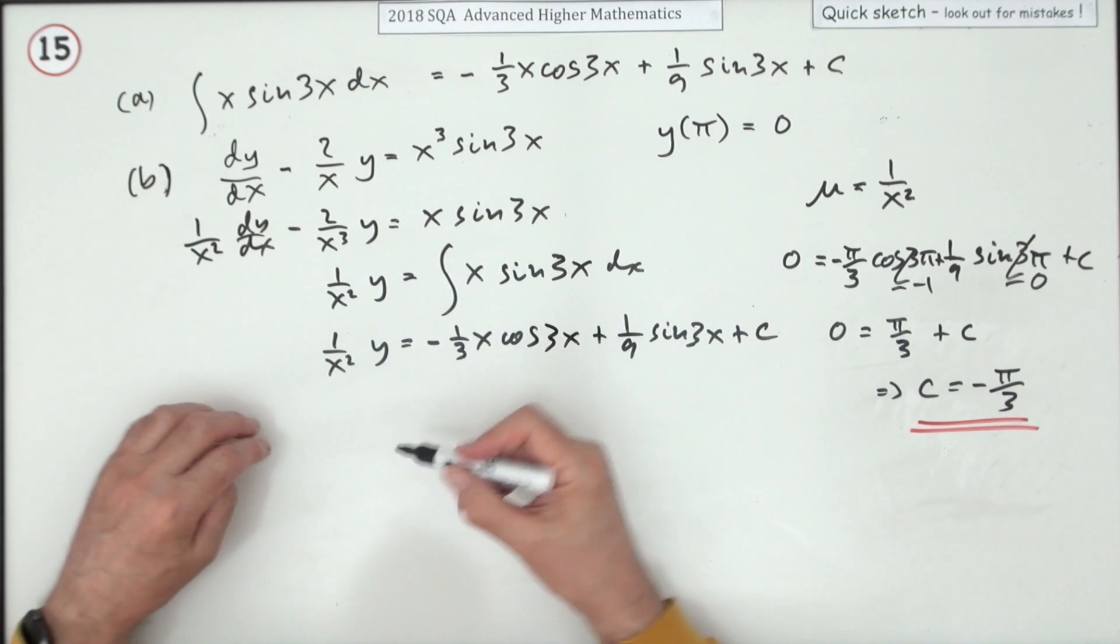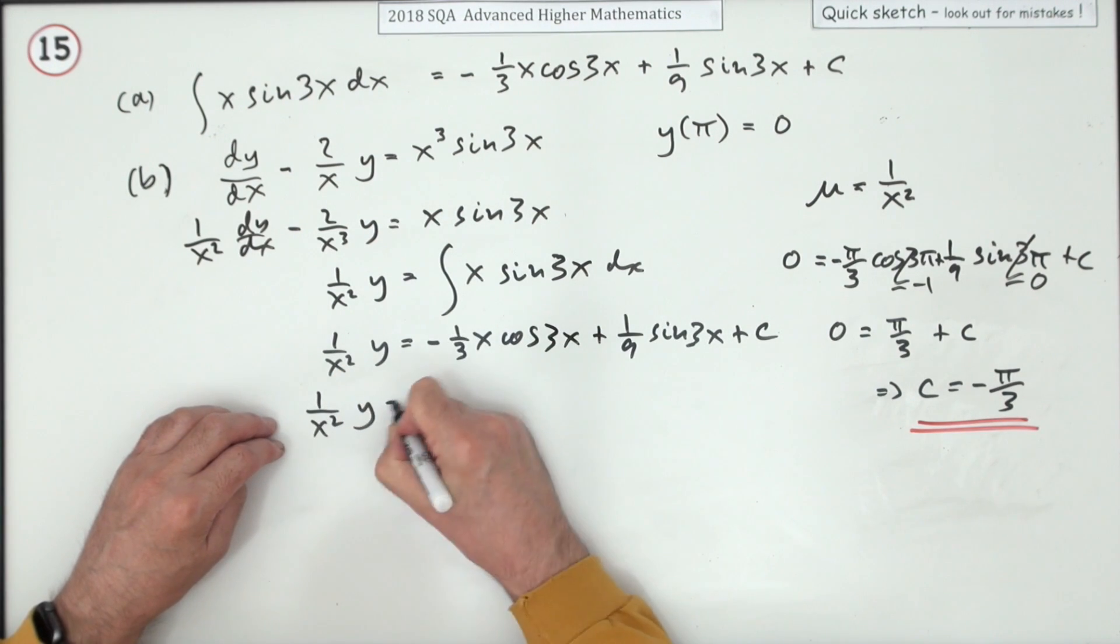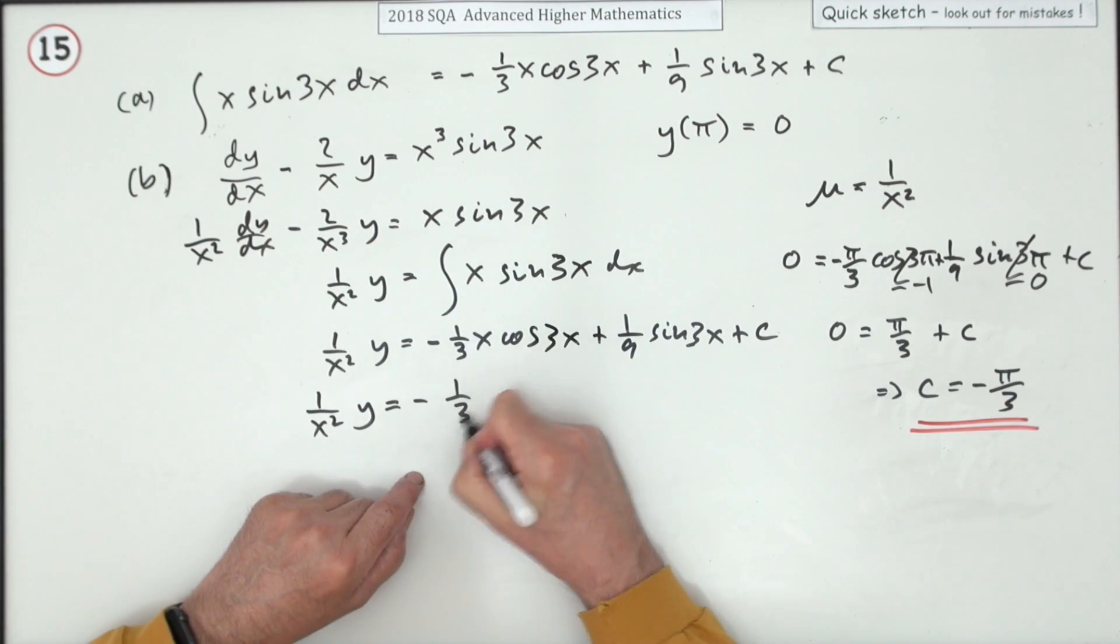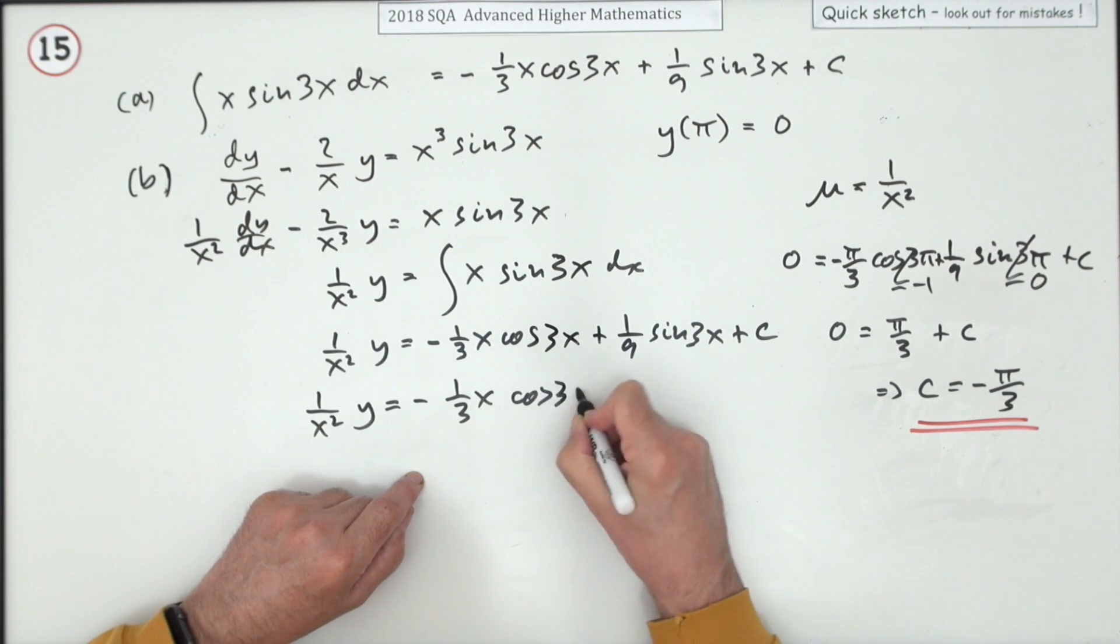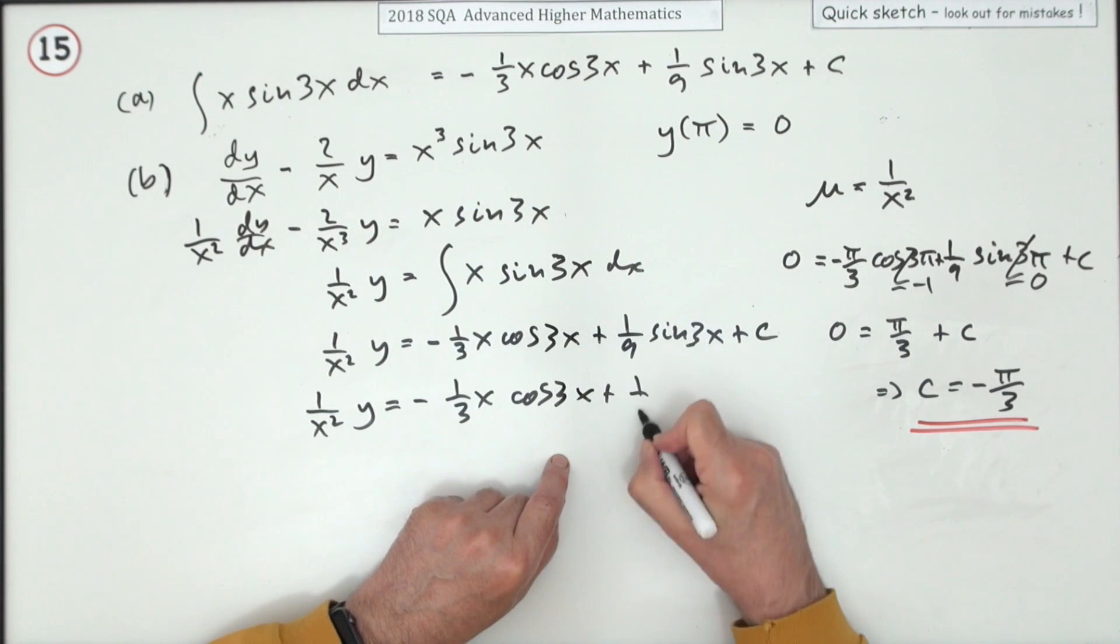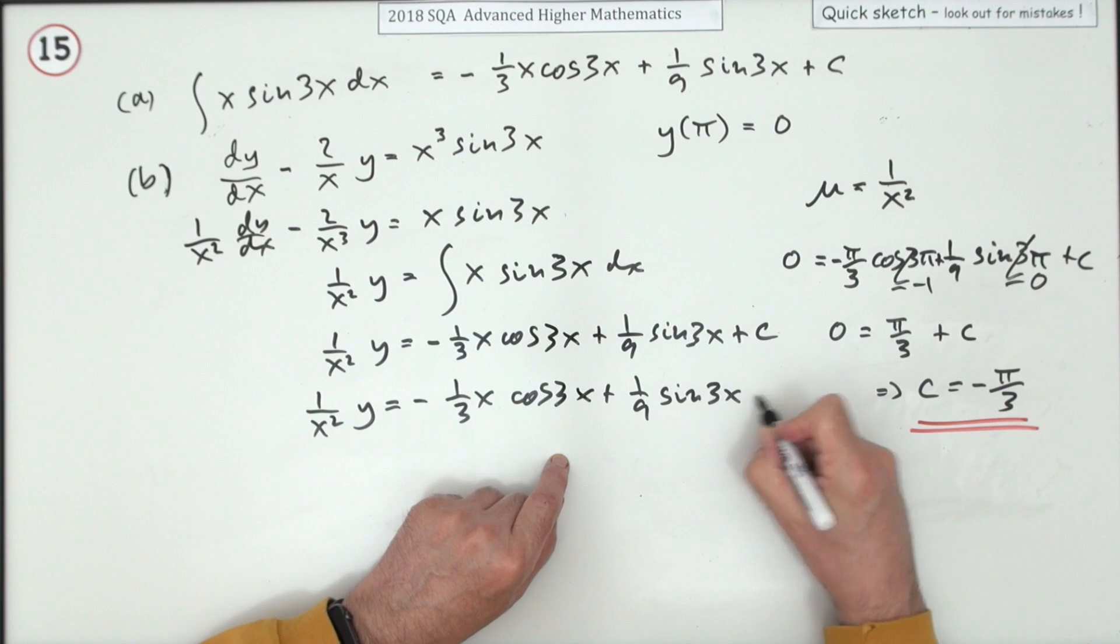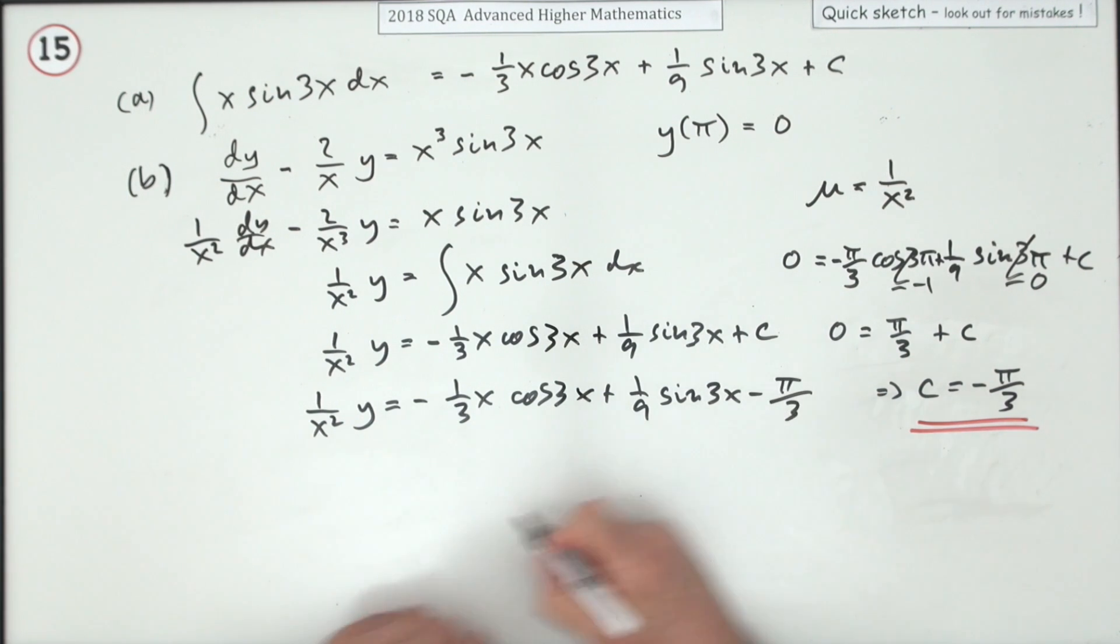Now we can pop it all together. 1 upon x squared y equals negative 1 upon 3 x cos 3x plus one ninth of sine 3x minus π upon 3.